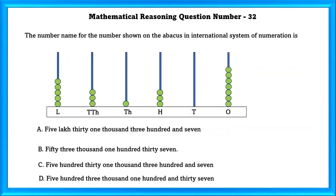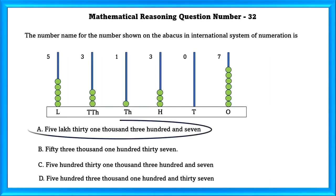Question No. 32: The number name shown on the abacus in the international system of numeration is 531,307, which is option A.